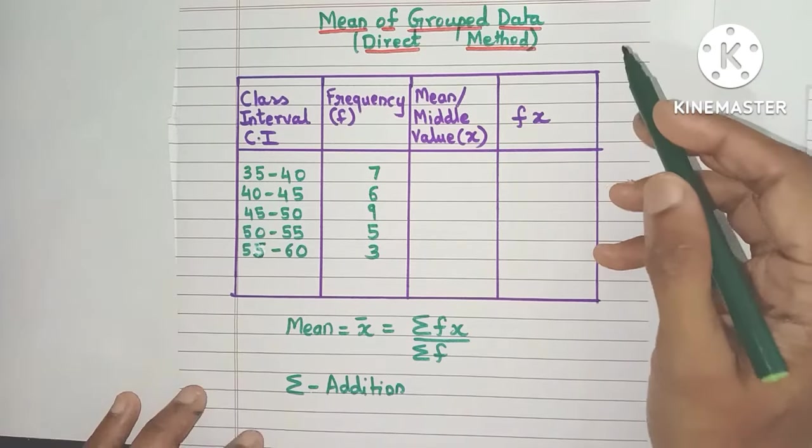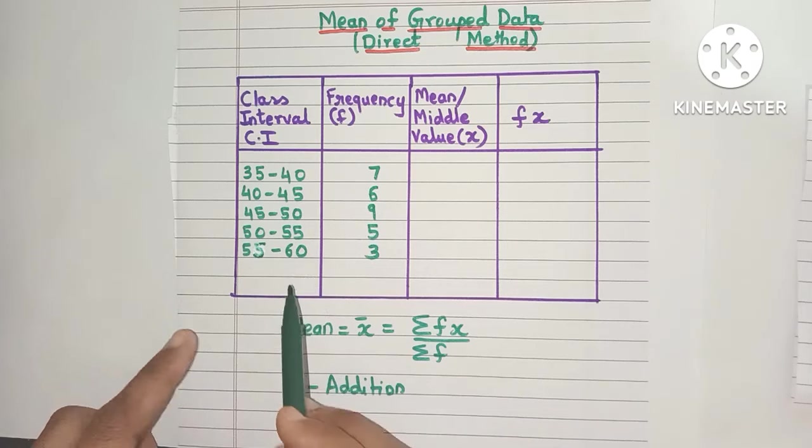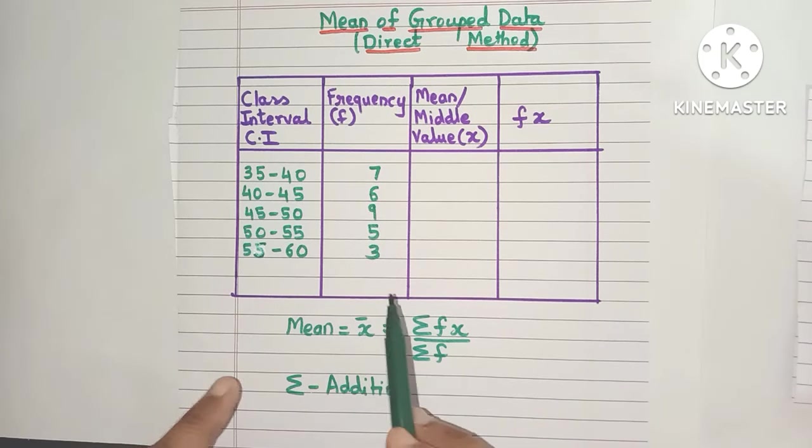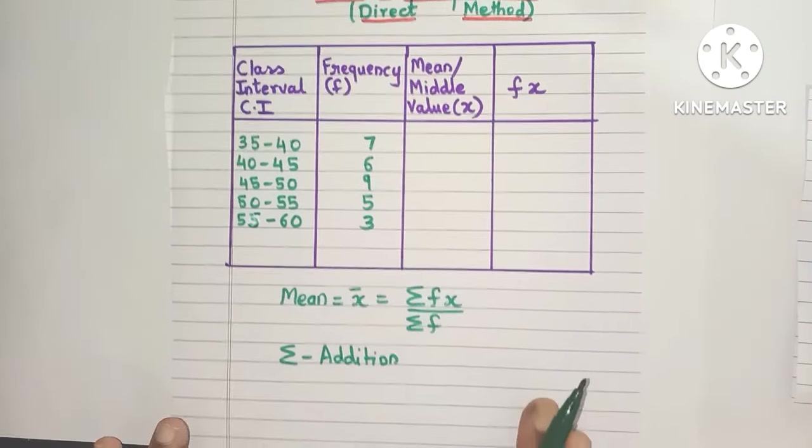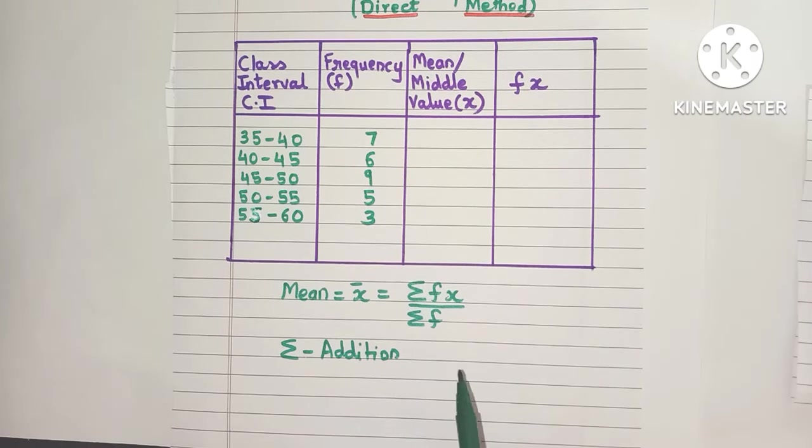Hello everyone. Today let's learn how to find the mean of grouped data. In this example, here is the class interval column and this is the frequency column. The formula is mean or x̄ equals Σfx divided by Σf.